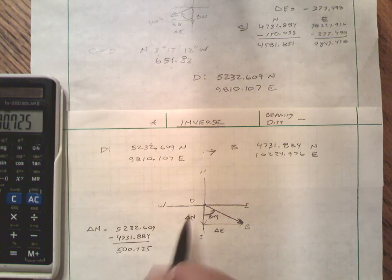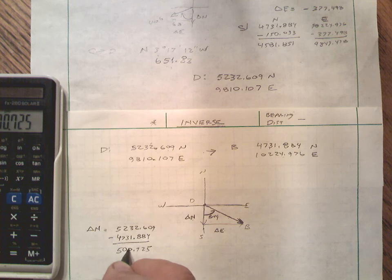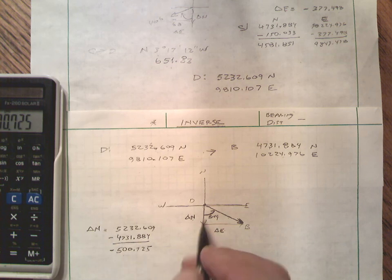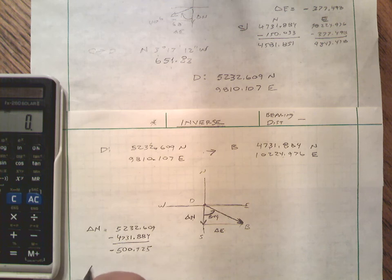Now that means that this is 500 feet, and we can go ahead and put the negative in. I usually don't worry about it, but for emphasis I'm going to put it in right at this point. So we're going to go south 500.725. And then our change in easting...